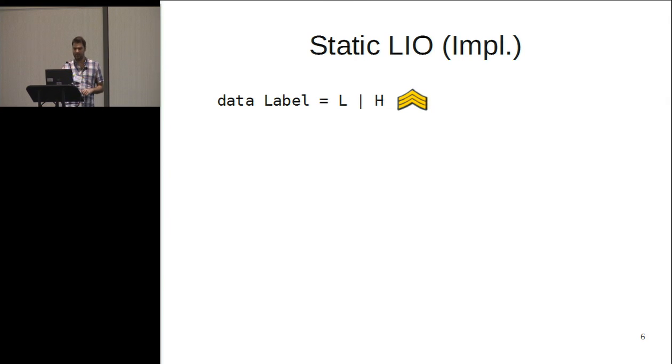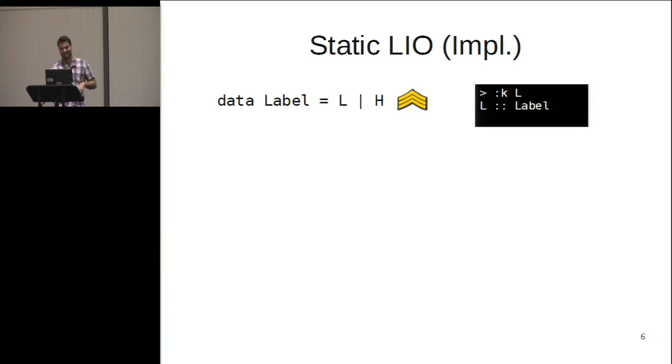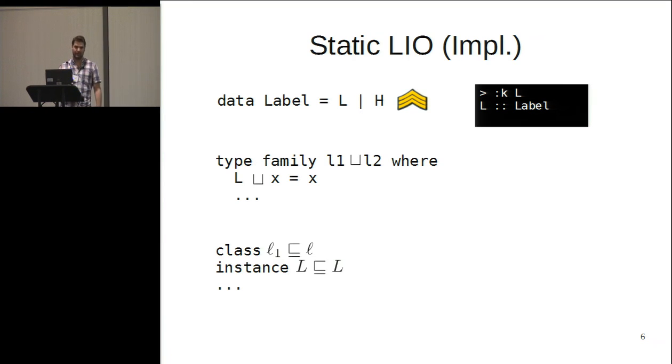This is basically our encoding of static LIO. It requires quite a few things. First, we need a type level representation of labels. We define a data type for labels and then promote it using data kinds. We get a new kind called label with L and H as members. We also need a closed type family to encode the least upper bound function with the expected equations. And we also need a type class that encodes the actual partial order, and the associated instances of the valid flows.